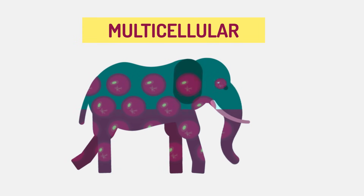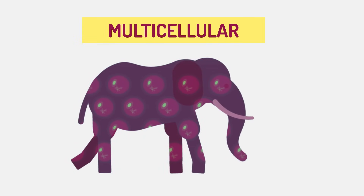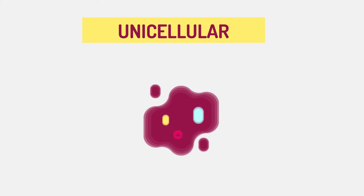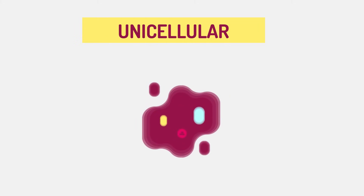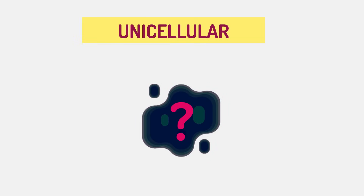Multicellular organisms have long lifespans because individual cells have a relatively small workload, whereas the hard-working single cell of a unicellular organism has such a heavy workload that it can only maintain a very short lifespan.